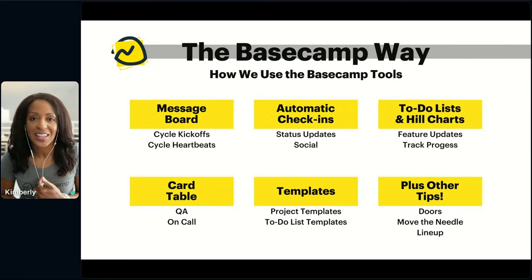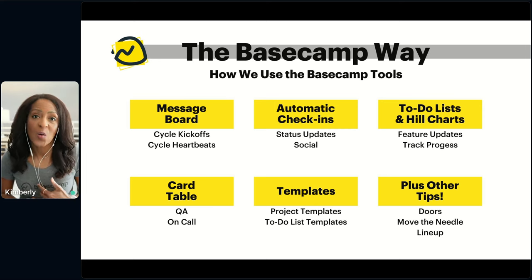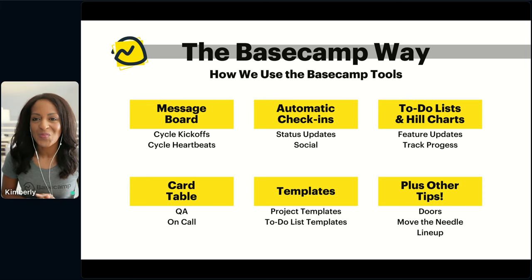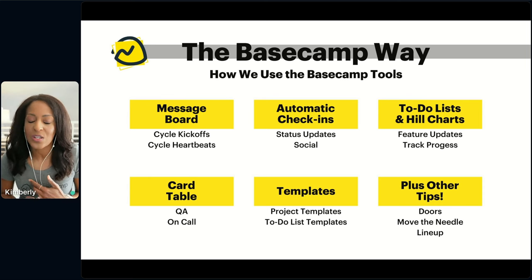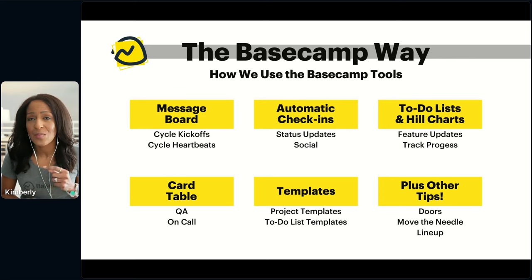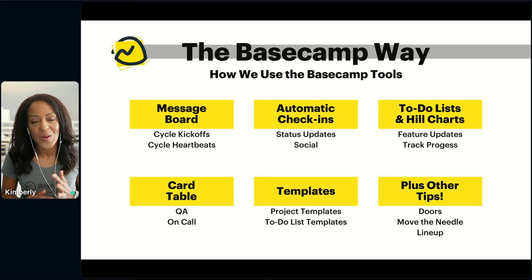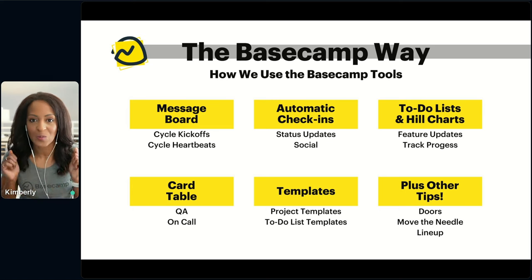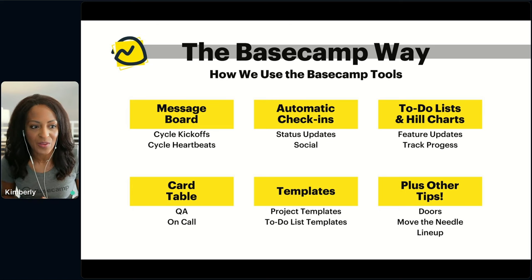We're also going to walk through today how we use some of the different Basecamp tools: things like the message board with kickoffs and heartbeats for product feature updates; automatic check-ins for status updates and social reasons; to-do lists and hill charts, which we use very frequently; the card table used by our QA and on-call teams; templates; and other tips. All those things we'll be sharing with you today.